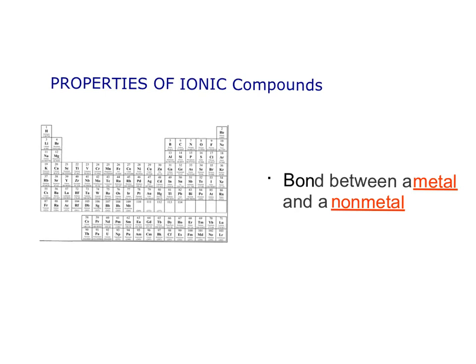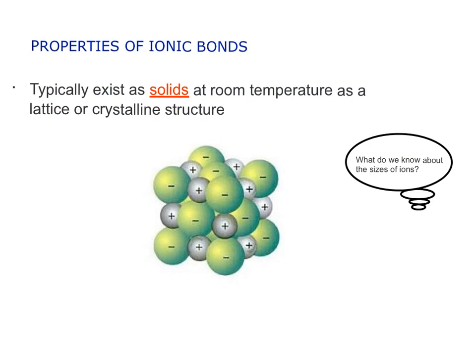The last section covers properties of ionic bonds. It's always going to be between a metal and a nonmetal with very different electronegativities. They typically exist as solids at room temperature as a lattice or crystalline structure. Cations are a little smaller because they're losing electrons — with more protons than electrons, there's a stronger pull on the outer electrons. Anions are bigger because they've gained electrons.